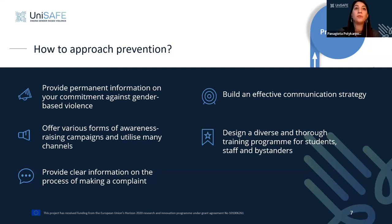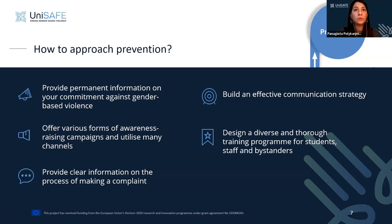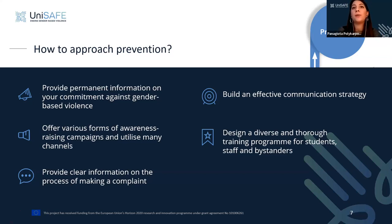A thorough educational program should at minimum ensure participants are informed about the definition of gender-based violence and its forms, understand power imbalances and how they contribute to violence, recognize warning signs and behaviors indicating risk, review organizational policies and procedures, relevant laws and legal protection for victims and perpetrators, techniques for bystander intervention, and skills for promoting a culture of respect and equality.